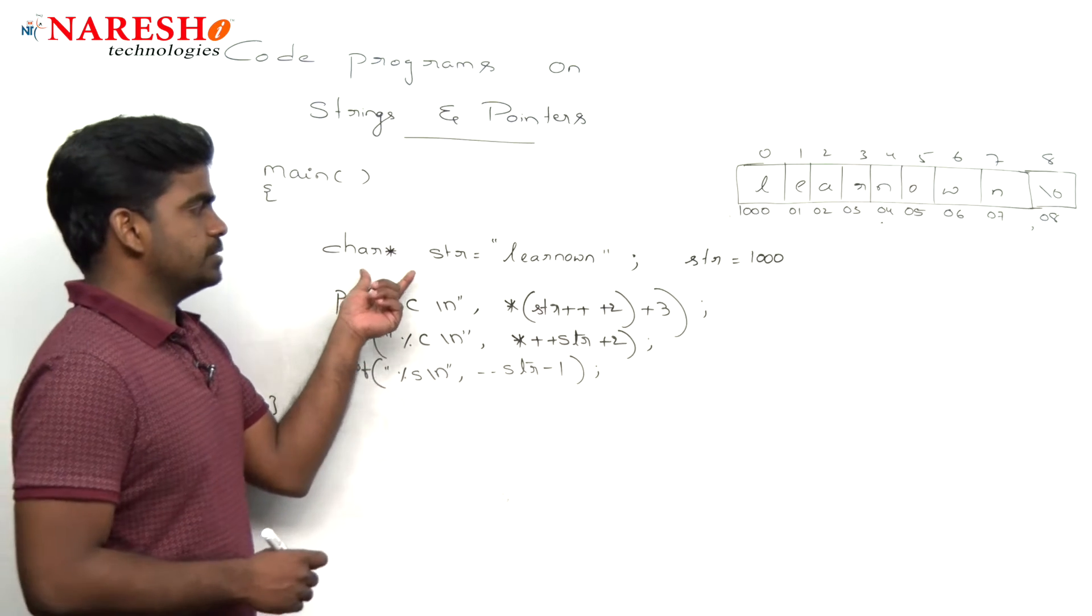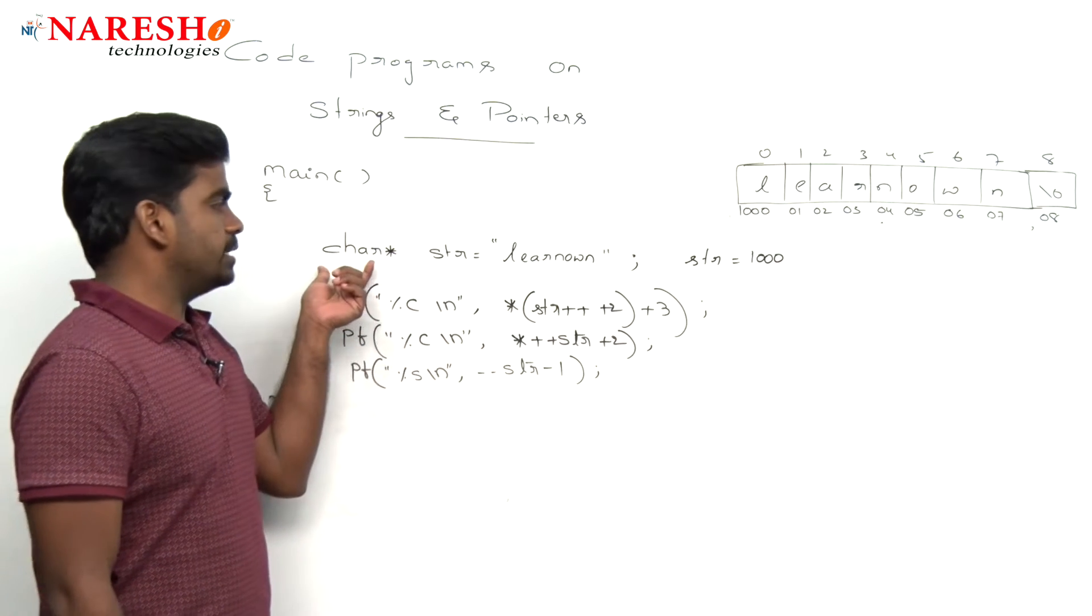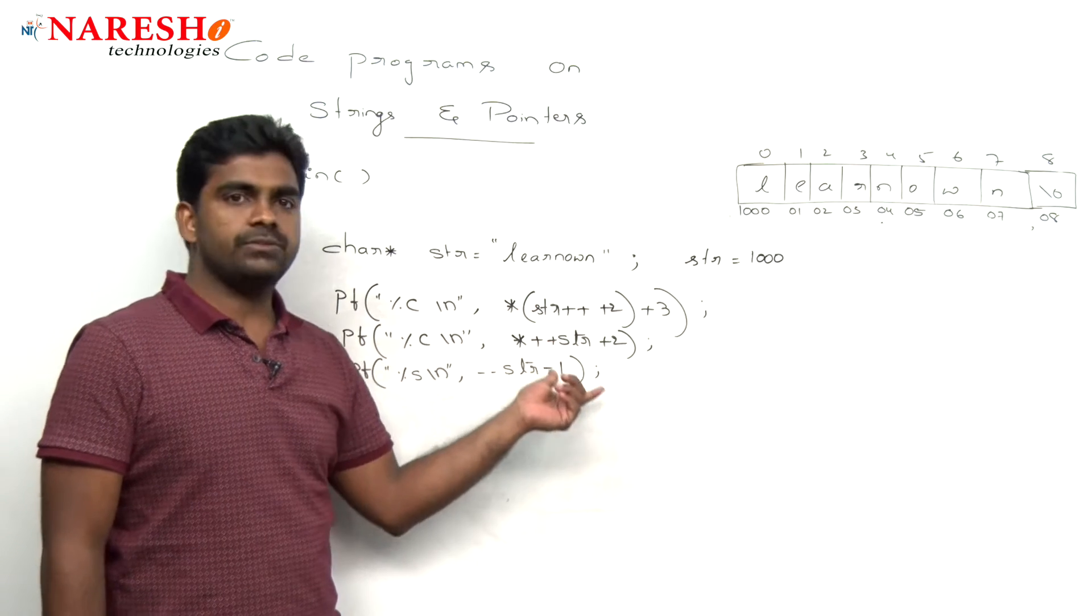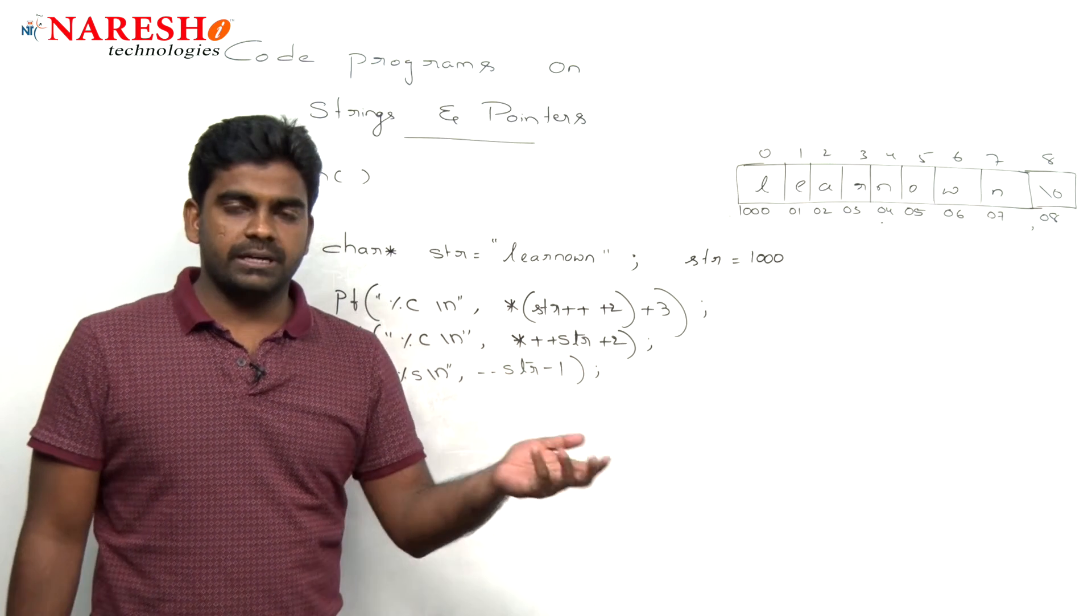Here it is, we took one string using the character pointer variable and they mentioned pre-expressions, including modify operators, arithmetic operators and pointers.